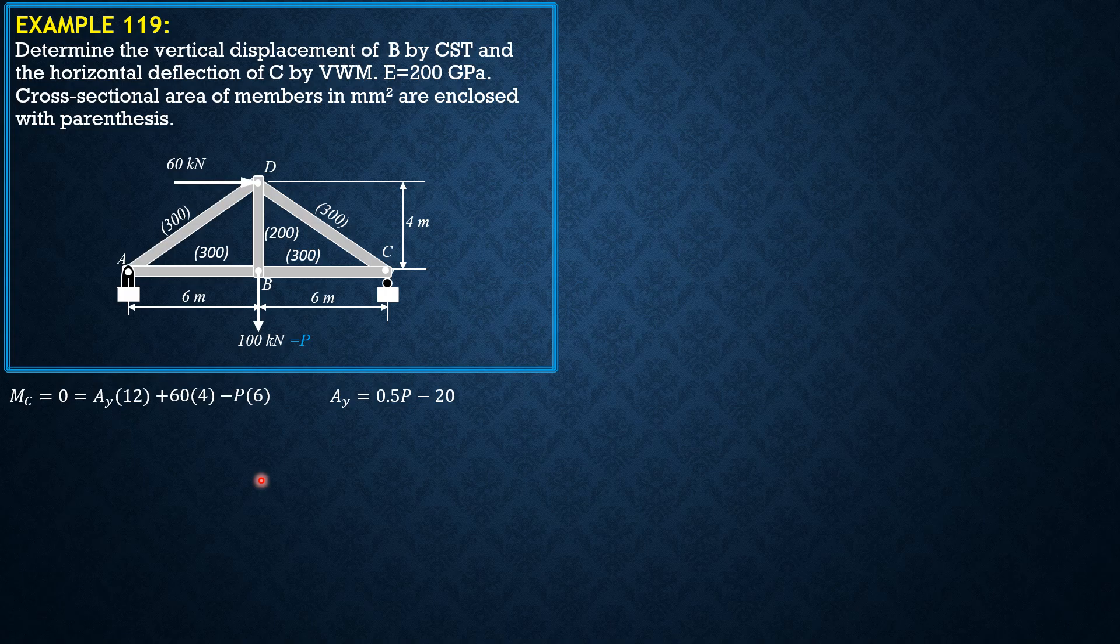Then summation forces Y: Cy plus Ay equals P, so Cy is 0.5P. Summation forces X: that's 60, Ax. And 0.5P minus 20 plus R sub C equals P, so R sub C is 0.5P plus 20.